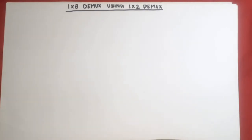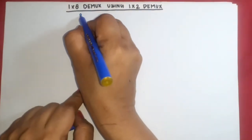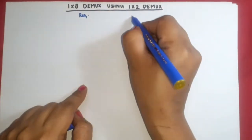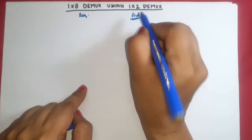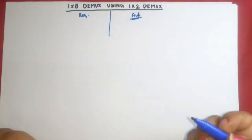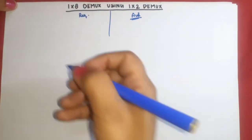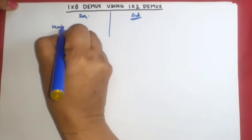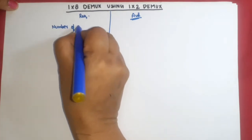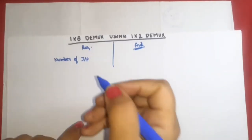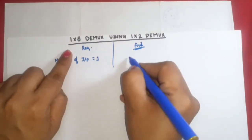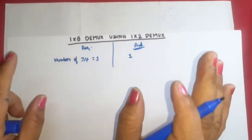Hello everyone. In this video I am going to discuss how we can design a 1-to-8 demultiplexer using a 1-to-2 demultiplexer. So first we find out the number of inputs, outputs, and selection lines separately. The number of inputs for 1-to-8 is equal to 1, and for 1-to-2 is also 1.